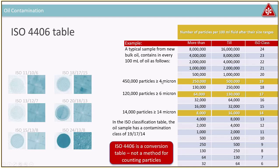What this table doesn't tell you is how you got the numbers — whether by laser particle counter, pore blockage or flow decay method, or membrane. You can only compare numbers if you're using the same technology. Using different labs, you will see a difference in ISO counts — a class 19 in one lab could be 20 or 18 in another. Every time you increase one class number, you're actually doubling the particle count.